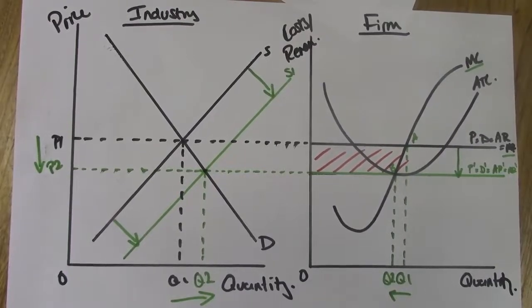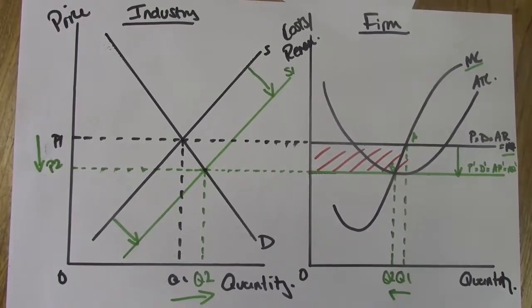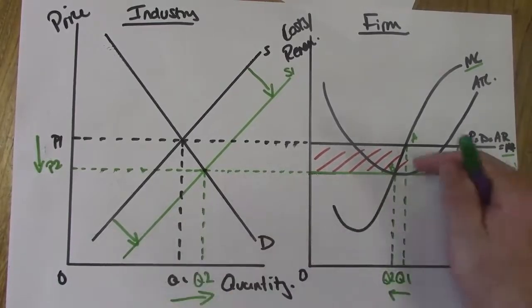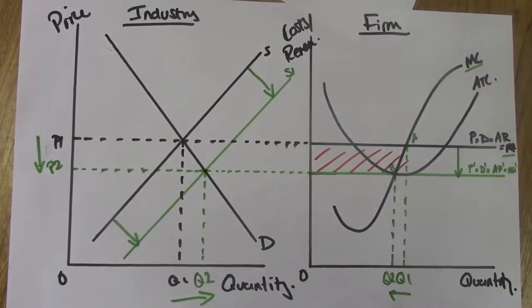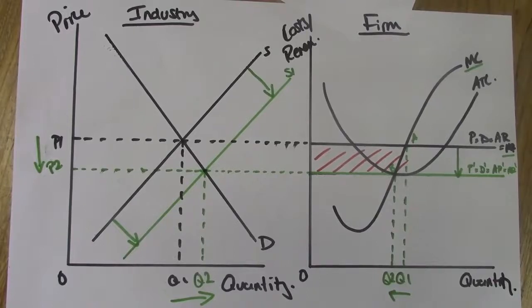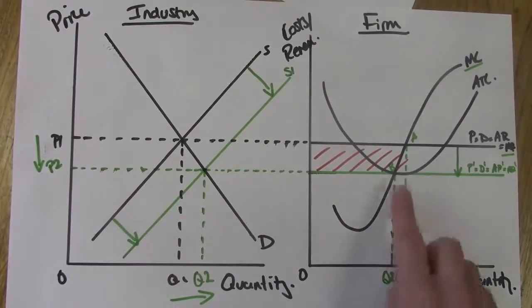Quick overview to finish: if a firm is making supernormal profit, number one it acts as an incentive for new firms to enter the industry; number two supply will increase in the industry; number three that will decrease price levels and increase competition; number four it will decrease the P=D=AR=MR curve for the firm; and point five profits will decrease - in this example from supernormal profits down to normal profits - with the profit maximizing level of output decreasing from Q1 to Q2. This is because of low barriers to entry, fully mobile factors of production, and perfect knowledge. Firms in perfect competition can only make supernormal profits in the short run, and only make normal profits in the long run.